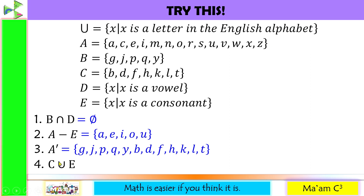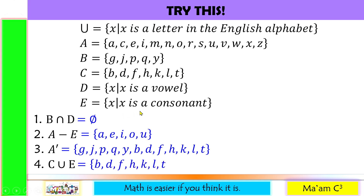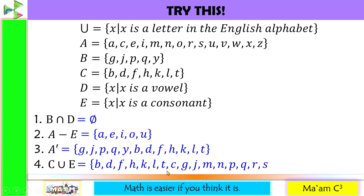Number 4: C union E. These are the elements found in set C, set E, and in both set C and E. Set C contains the tall letters: B, D, F, H, K, L, T. Set E contains the consonant letters. The consonant letters not yet included in the tall letters are C, G, J, M, N, P, Q, R, S, V, W, X, Y, and Z. So C union E includes all tall letters combined with all consonant letters.